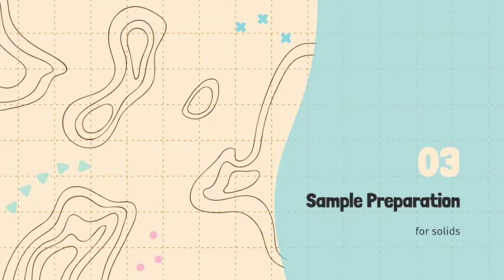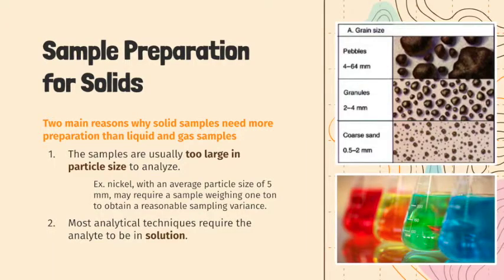The last step in the sampling plan is sample preparation. Compared with liquid and gas samples, solid samples usually require more preparation and processing before analysis. There are two main reasons for this. First, the samples are usually too large in particle size to analyze. Since sampling variance is based on the number of particles and not the total mass, obtaining a reasonable sampling variance with a large particle size requires a larger total mass — for example, a nickel-bearing ore with an average particle size of 5 mm may require a sample weighing 1 ton. Second, most analytical techniques, particularly those used for quantitative analysis, require the analyte to be in solution.